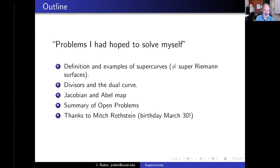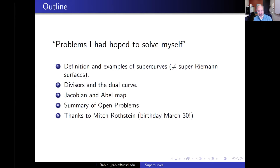I will start with the definition and some examples of super curves. These are a larger class of objects than the things called super Riemann surfaces in the physics literature. Then I'll talk about divisors on super curves and the idea that super curves come in pairs that are dual to each other, and should be studied in these dual pairs rather than individually. Then I'll talk about the Jacobian of a super curve and the Abel map to the Jacobian. There'll be a selection of open problems throughout, and I'll try to summarize them at the end. I'll try to keep things relatively non-technical — emphasizing ideas and concepts more than formulas.